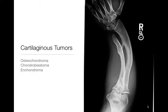Moving on to cartilaginous tumors. Three main cartilaginous lesions we're going to look at: osteochondromas, which are not truly tumors in the absolute sense of the word but we talk about them like they're tumors; chondroblastomas; and chondromas. This picture on the right shows a patient with multiple hereditary exostosis — multiple osteochondromas. You can see there's one coming off the radius here and a sessile one off the ulna, and it's caused a Madelung deformity, which is one of the causes of Madelung deformity.